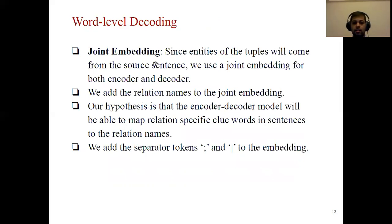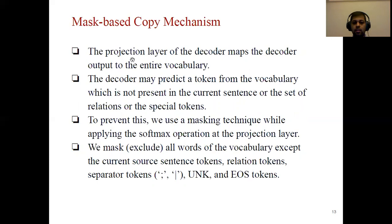To support this we make some changes to the model. First, we use joint embedding: since our entities mostly come from the source sentence itself, we don't need separate embeddings at the decoder — we combine them into a single embedding. Since relation names are generated in the same way as entities, we add relation names and separator tokens to the embedding. We also use a mask-based copy mechanism. Before applying the softmax operation, we mask or exclude all words from the vocabulary except source sentence tokens, relation tokens, unknown tokens, EOS tokens, and the special separator tokens.